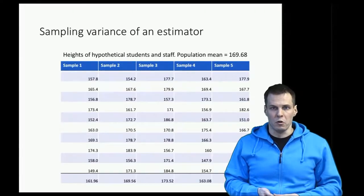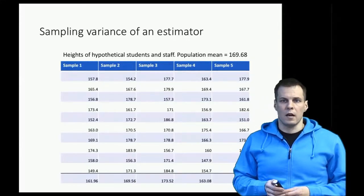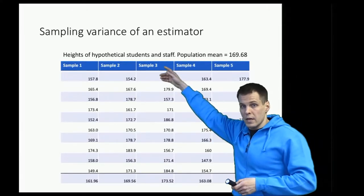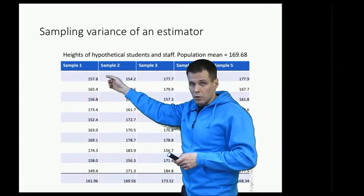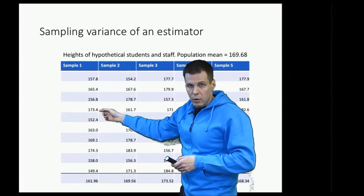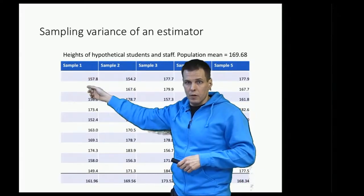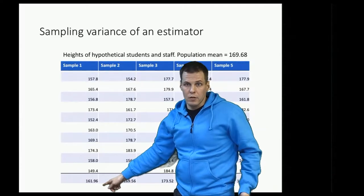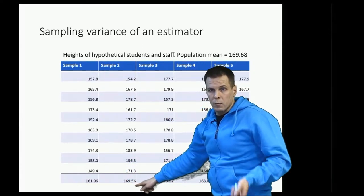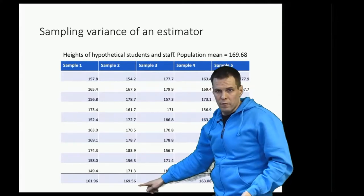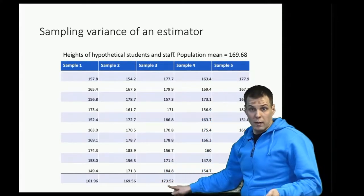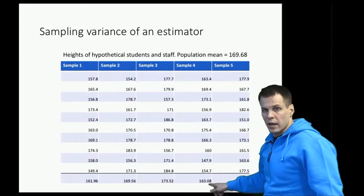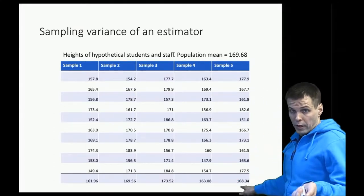We have a hypothetical university where the population mean height is 169.96 centimeters, and we have five samples, each of size 10. The first sample mean is 161 — we underestimate the population value by about eight centimeters. The second sample is 169.56, very close to the actual population value. The third random sample gives 173, which overestimates. Then we have 163, which underestimates again, and 168, which is close to the true population mean.